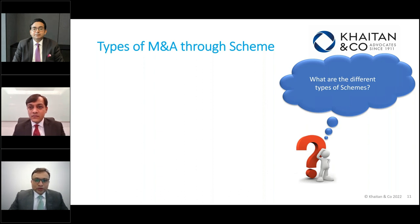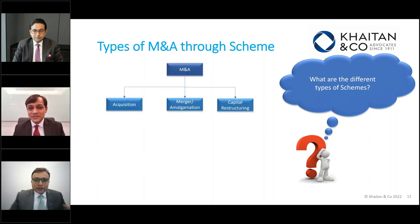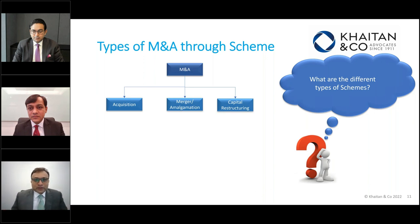Generally, the common understanding is that schemes can only achieve mergers, amalgamations or demergers. However, what we can show you is that anything and everything is possible under the scheme. In a generic M&A, you can only do a share purchase, share subscription or an asset purchase. You will not be able to do a capital restructuring or a debt restructuring, which otherwise can always be undertaken under a scheme.